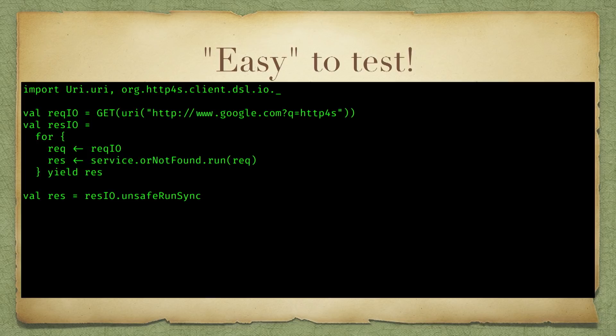What's one of the nice things about just having a function? Plain old functions are easy to test. Here we have an example where, given an incoming request, I run this function over it. I'm actually taking advantage of a little bit of elaboration that HTTP4S gives us for free with this 'orNotFound'. There's just a little bit of syntax — a for-comprehension around this elaborated function that is our service.